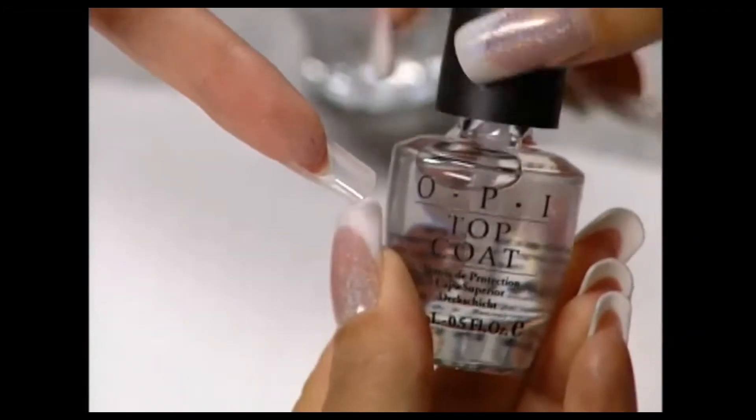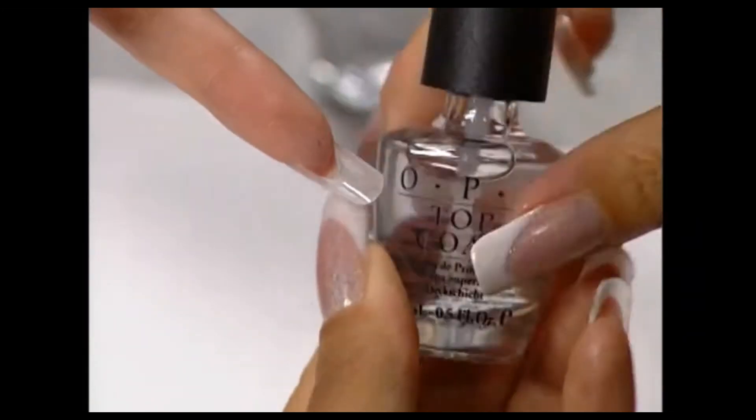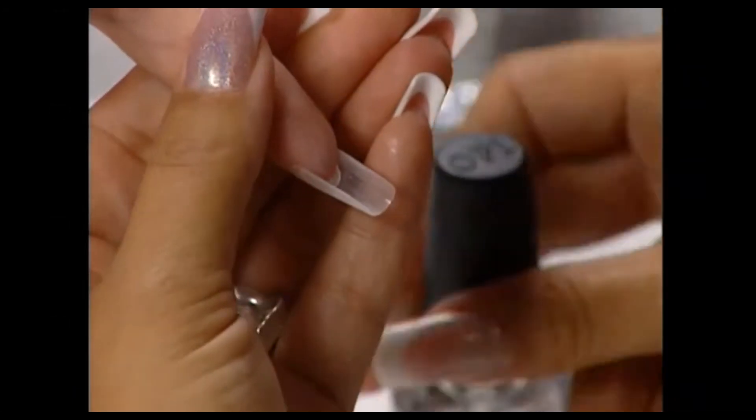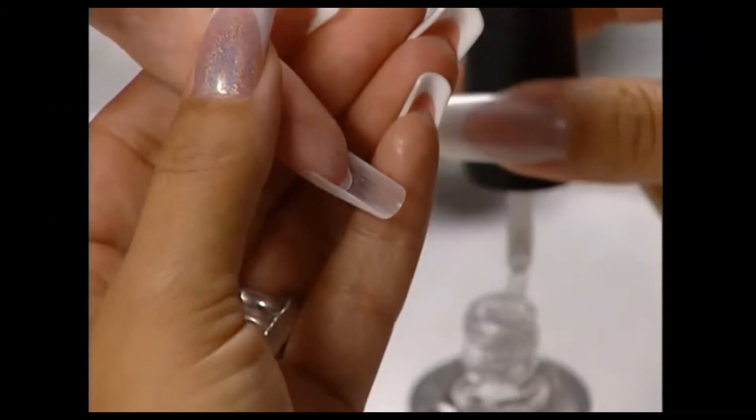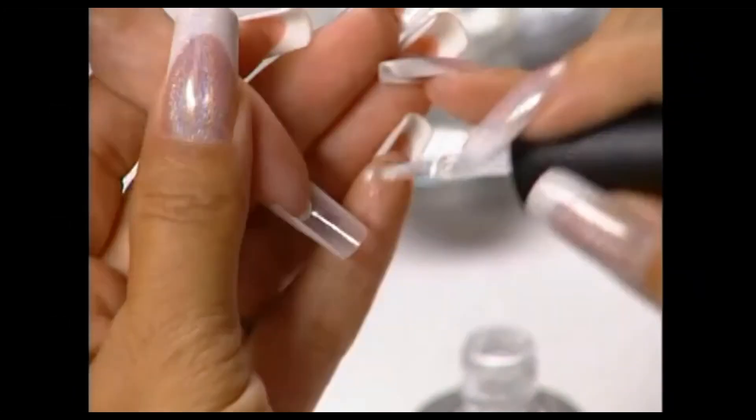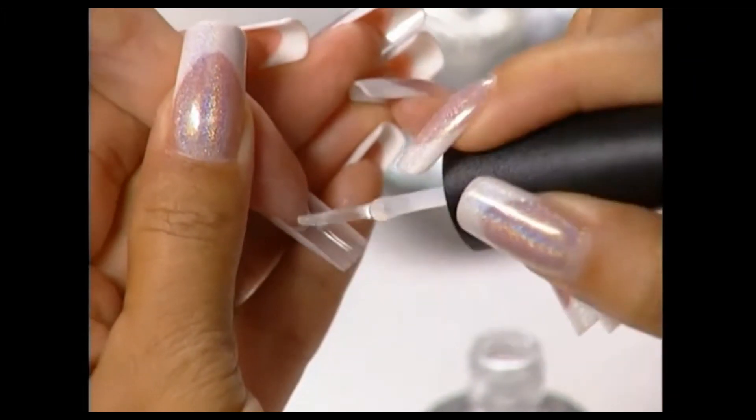An application of OPI topcoat on the underside and the surface of the nails really makes these clear nails pop. These nails are ready for nail art.